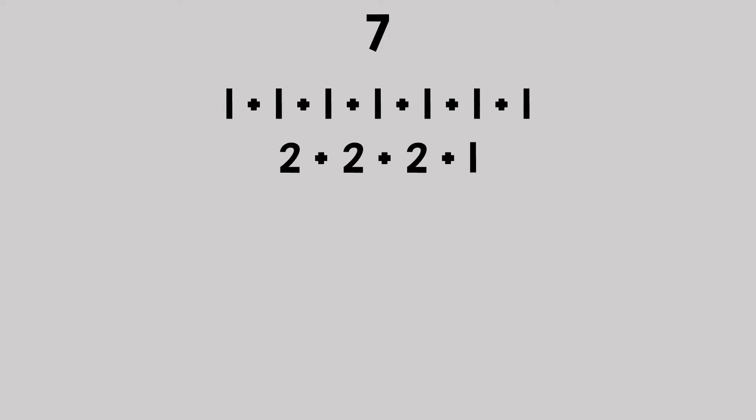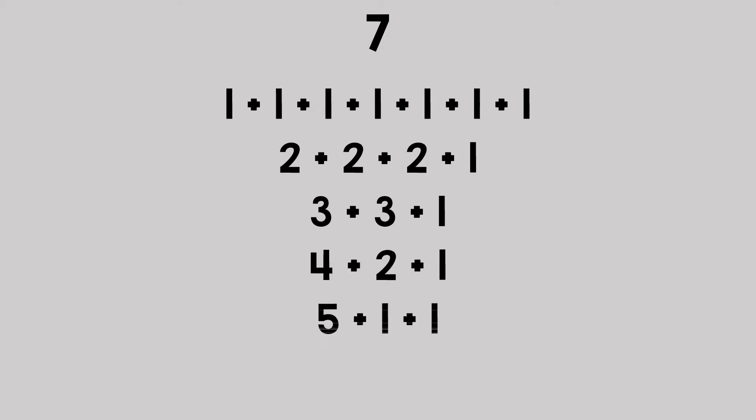Two plus two plus two plus one also equals seven. Three plus three plus one, four plus two plus one, five plus one plus one, and six plus one — all equal seven when added back together. There are multiple different ways that a number can be decomposed.